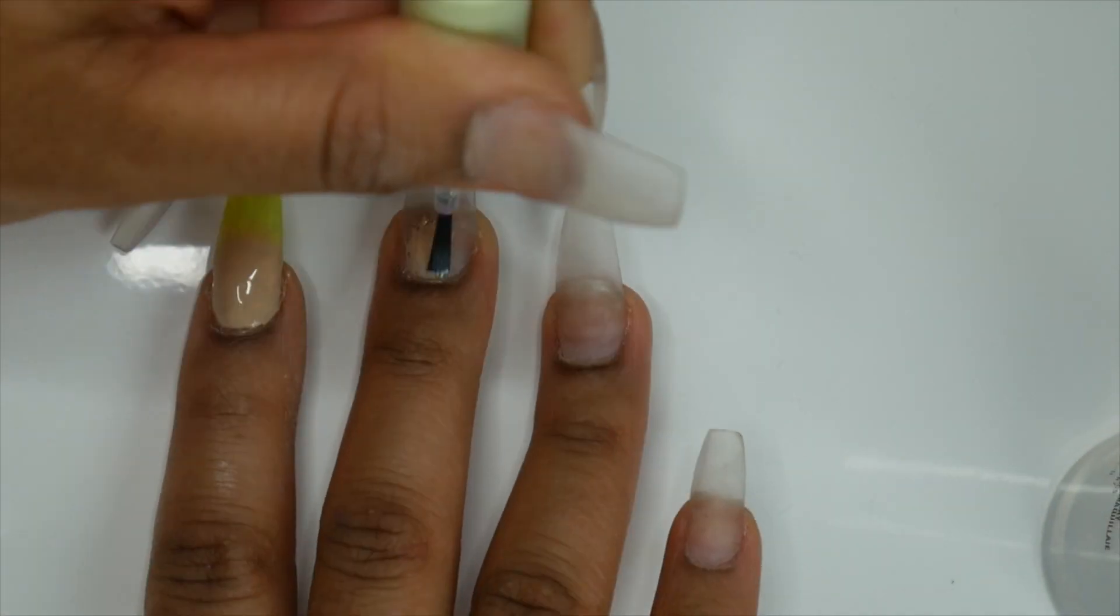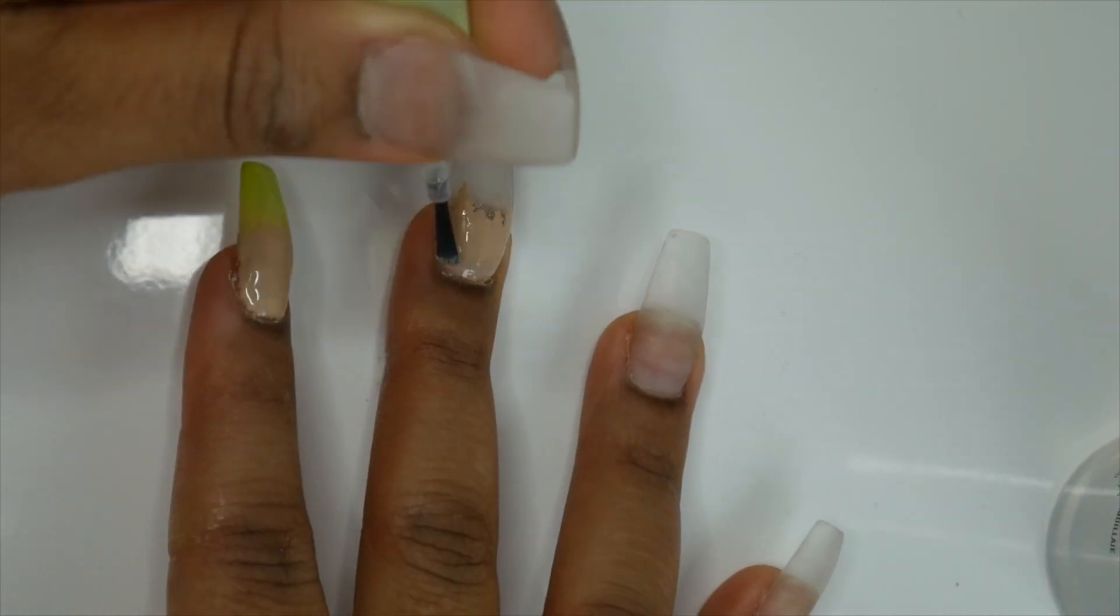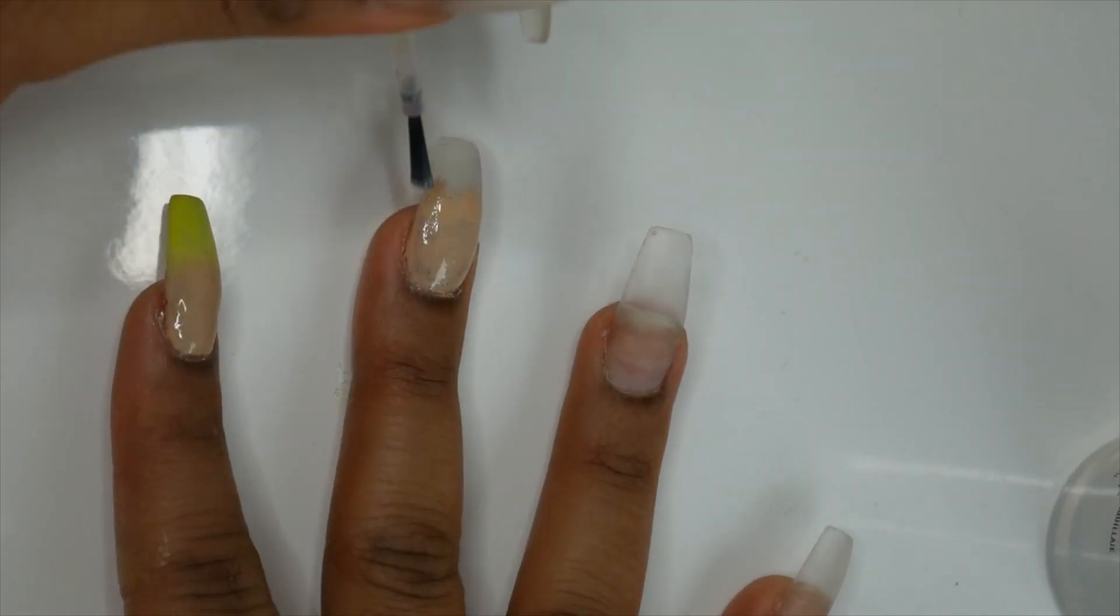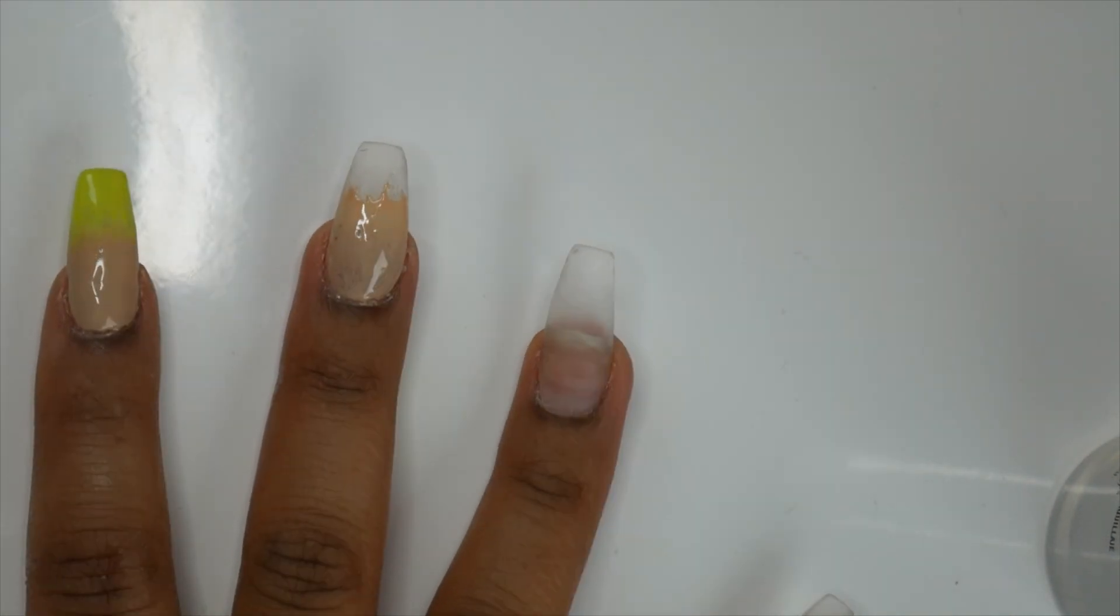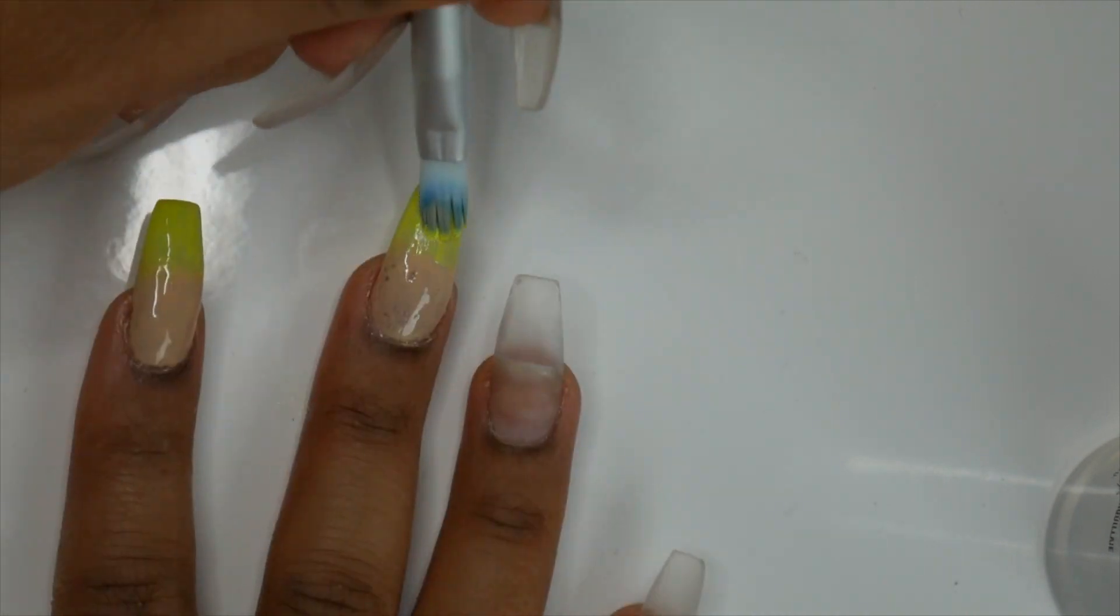So this design is super easy. You can do this with regular nail polish, gel polish like I'm doing here, or actual acrylic. Here I'm showing you how I did my middle finger, and I sped up the clip so it's way faster and you guys don't get bored, because it's a super easy technique.